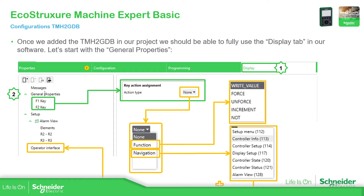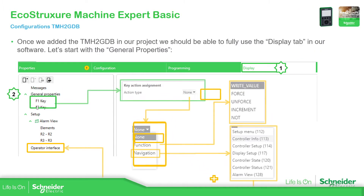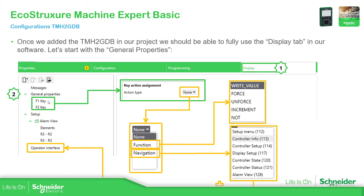What is important here is that in the general properties you have two keys. If you go back to the display part, you have F1 and F2 at the bottom, and you can assign some actions there. When you click on one of those, you can select from none to function or navigation — you can create a function to write a new value, or you can create a navigation to go directly to a specific page, either pre-configured or from ones we add later.